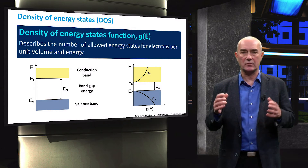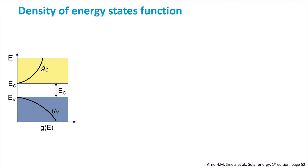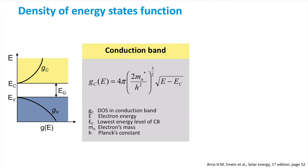Let's look into the equations that represent these densities. Here you see our density of states function plotted again. We can express the equation for the density of states in the conduction band as follows. The equation is based on a few constants like Planck's constant and the effective mass of an electron. Please note that the dependence on energy is a square root relationship — as the energy gets further away from the conduction band edge, denoted by EC, the amount of allowed energy states increases.